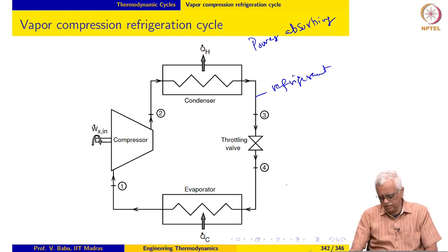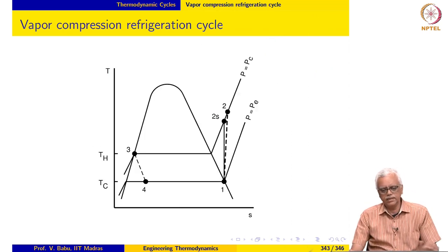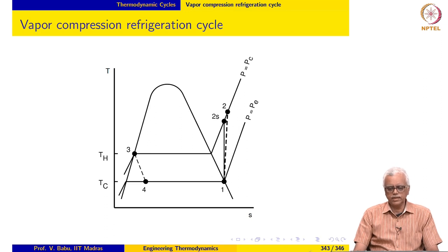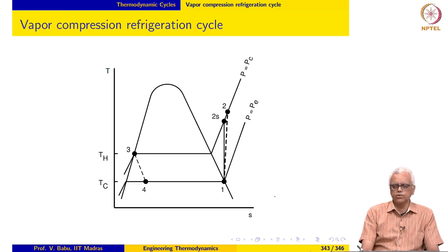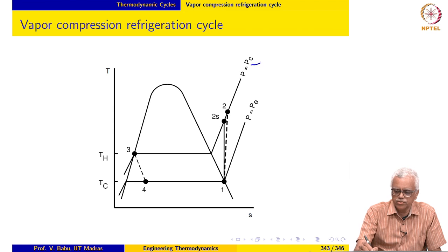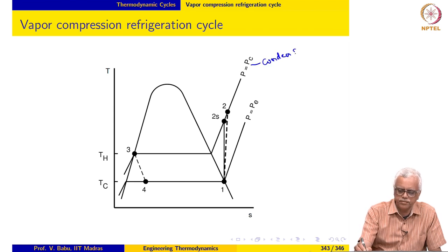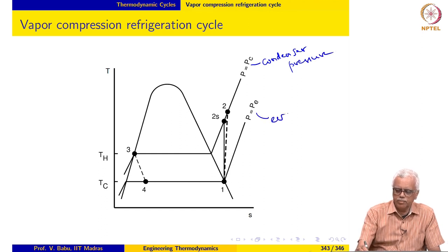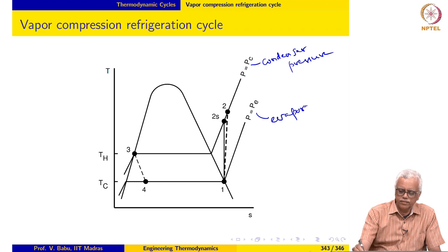If we represent the cycle in TS coordinates, this is what the cycle looks like. Again, this also operates between two pressures. This is the condenser pressure denoted PC. And this is the evaporator pressure denoted PE.